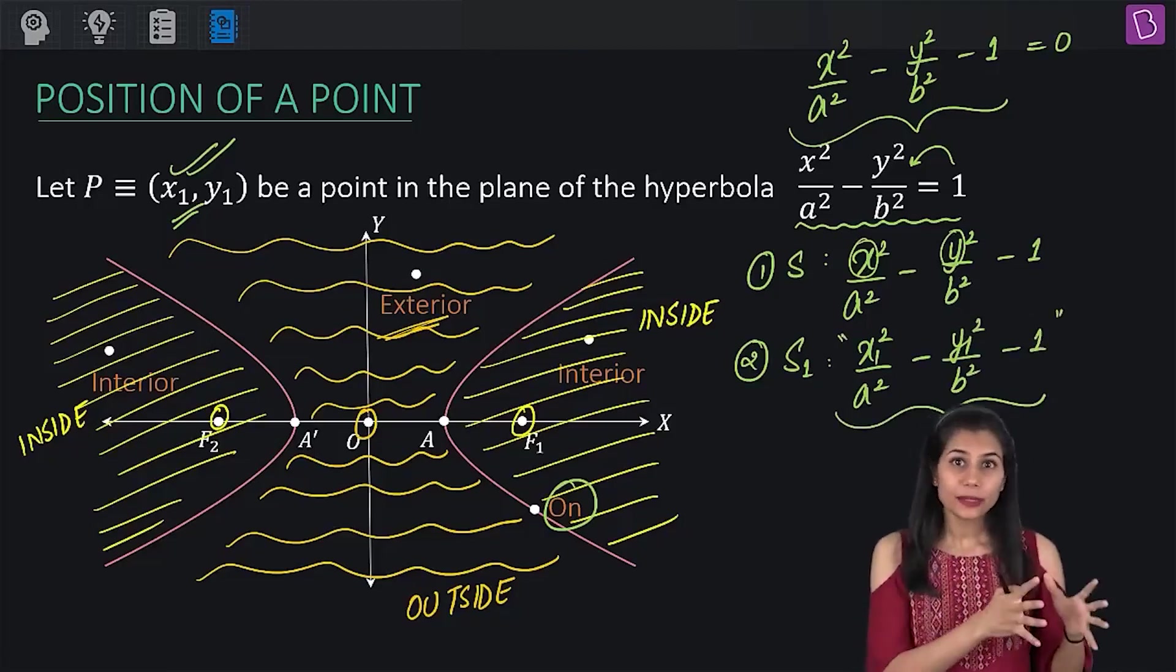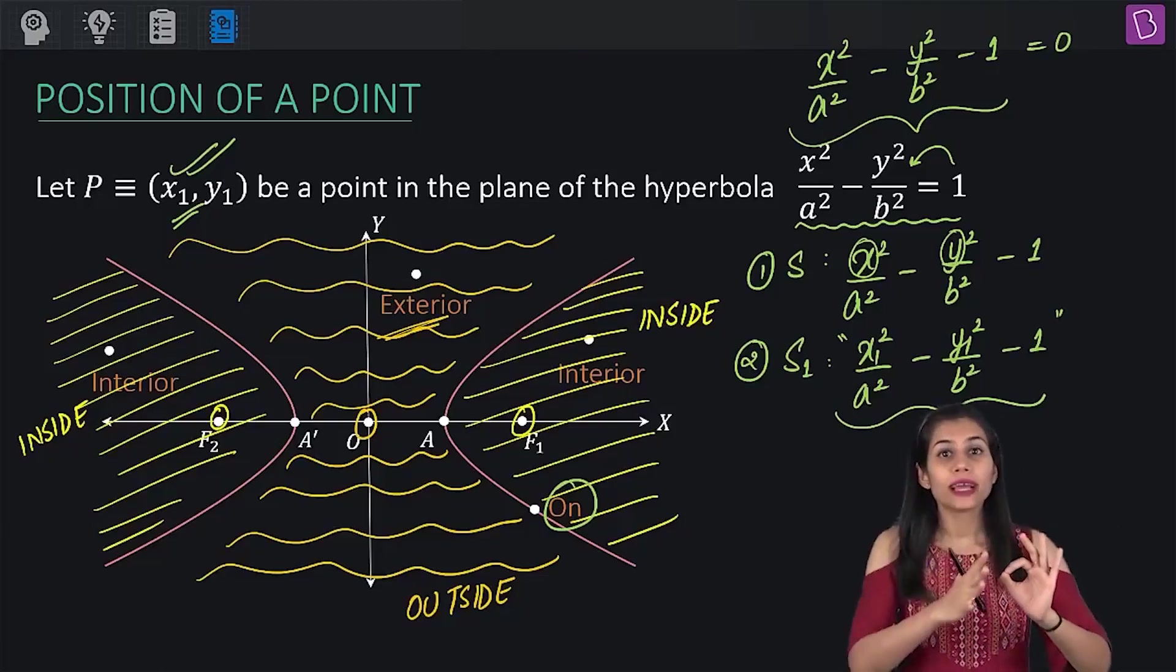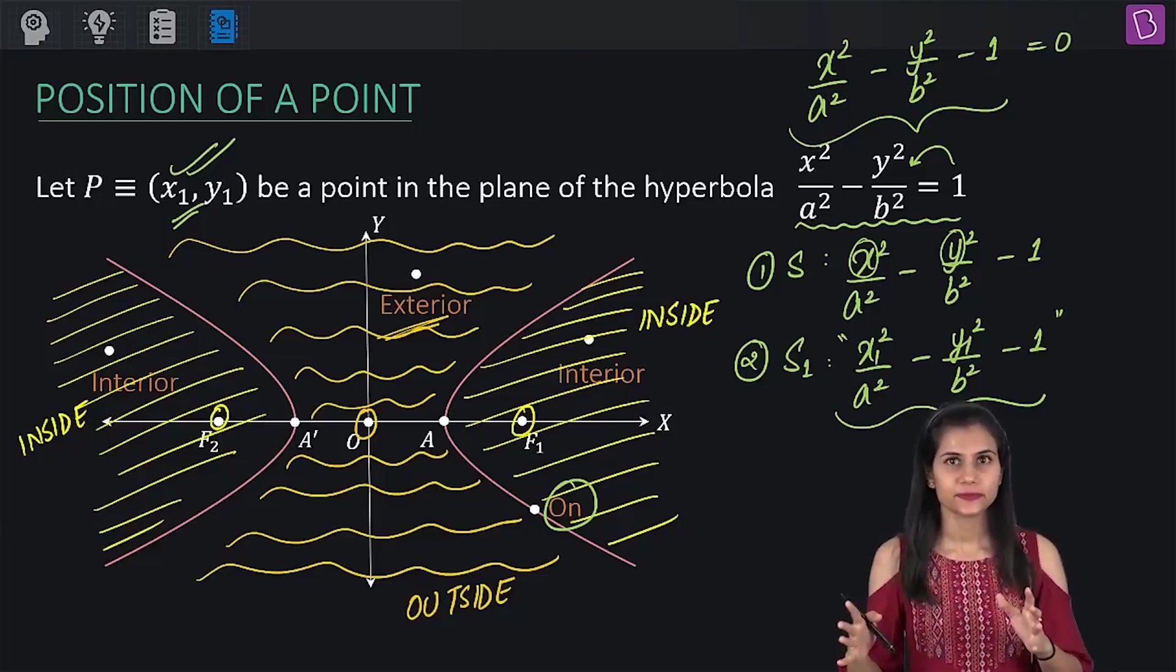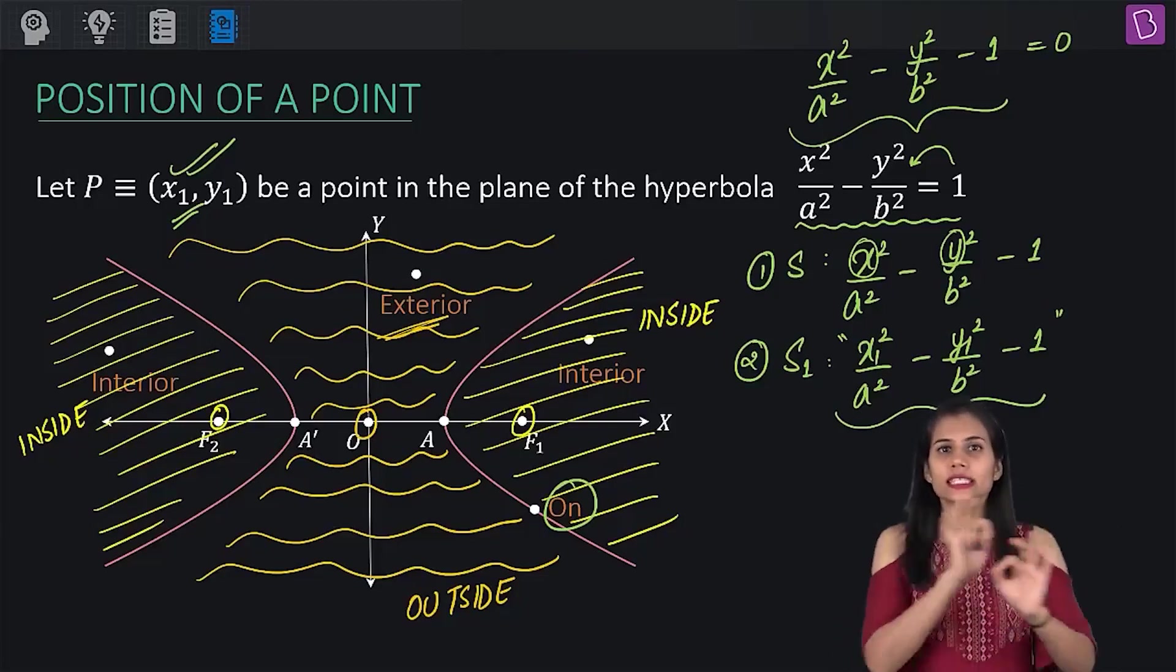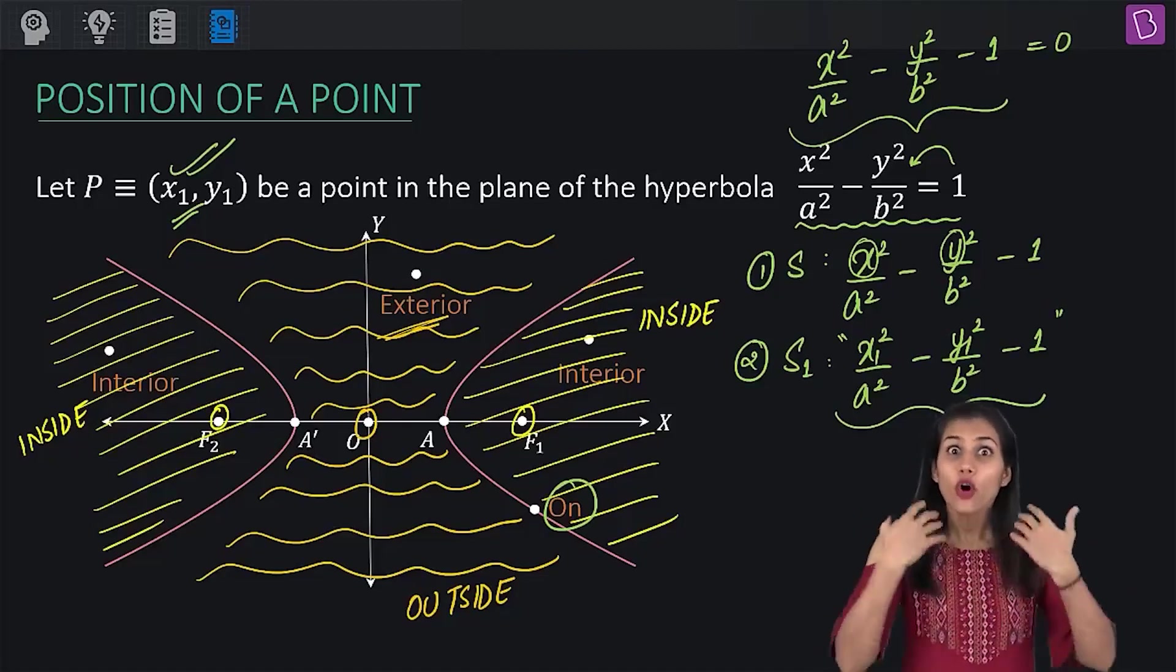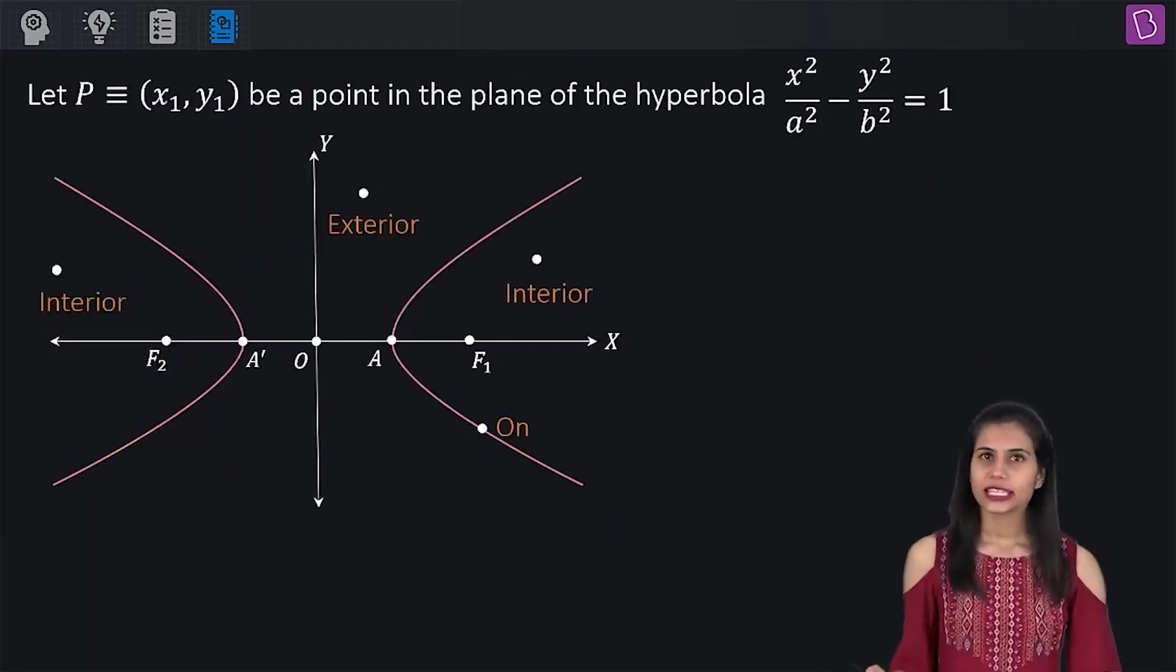Now, for a parabola, for a circle, even for an ellipse, what did we have? S1 greater than 0 implied outside, S1 equal to 0 implied on, and S1 less than 0 implied inside. This conclusion doesn't prevail for a hyperbola. Exact opposite conclusion prevails here.